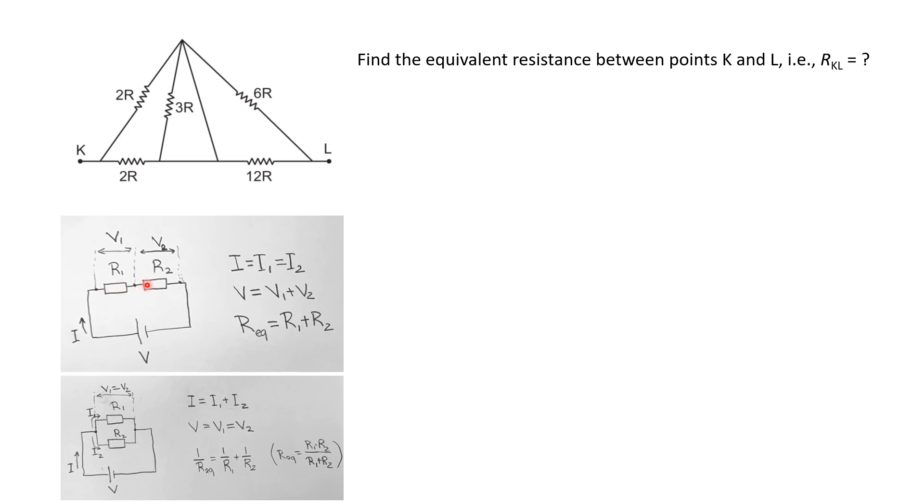In the case when two resistors are connected in parallel, your current I splits into current I1 that goes through resistor R1 and I2 that goes through the second resistor. They then combine back and go into the battery, so I = I1 + I2.